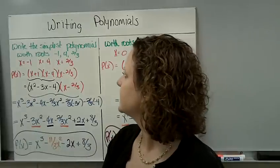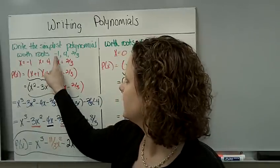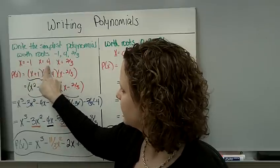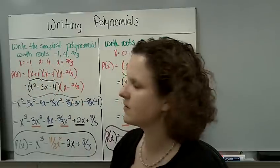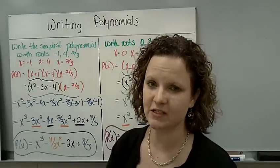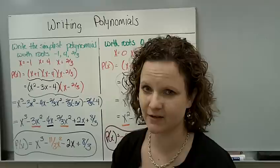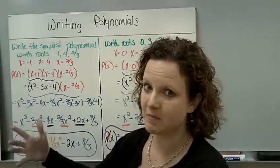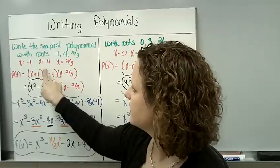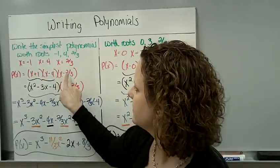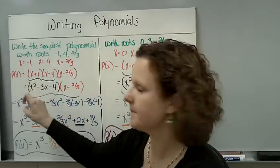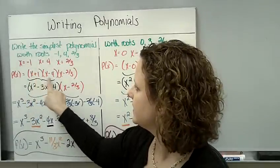So first, we're going to write the simplest polynomial with these three roots. So that means x = -1, x = 4, and x = 2/3. Those are the roots that are given to us. In previous sections, we've learned to solve and find those roots. So now we're working backwards. So we're going to set all of these equal to 0 and put them as their factors and multiply them binomial, two binomials at a time. So foil this.